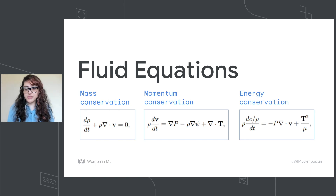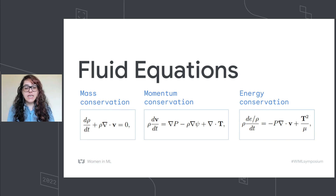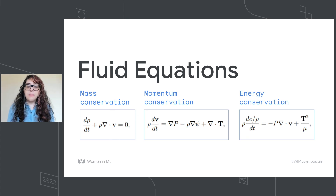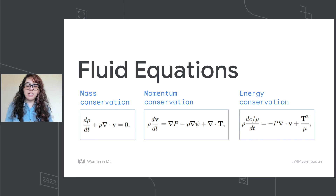These GRMHD simulations are very hard to compute. The fluid equations are considered one of the most difficult equations in physics. We have three different equations: the mass conservation equation, the momentum conservation equation, and the energy conservation equation — all of them very hard to solve, requiring very powerful computational tools. And when you add magnetic fields and GR, the complexity goes orders and orders of magnitude harder.